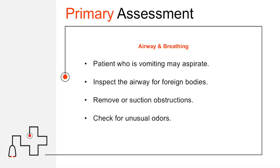Next we assess airway and breathing. If a patient has vomited, they have a greater chance of aspiration, and you don't want them to develop aspiration pneumonia or an airway compromise. Suction any vomit, maintaining a patent and open airway. Inspect the airway for foreign bodies and remove or suction obstructions. Check for unusual odors — patients with advanced bowel obstructions can have breath that actually smells like stool. Also, a metallic smell could indicate blood.